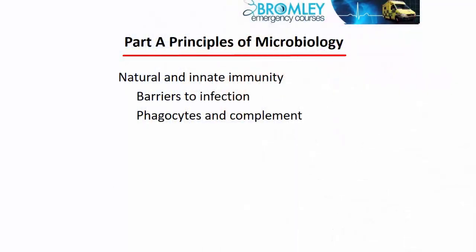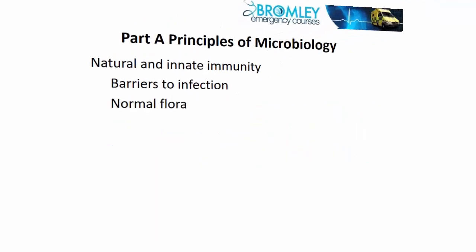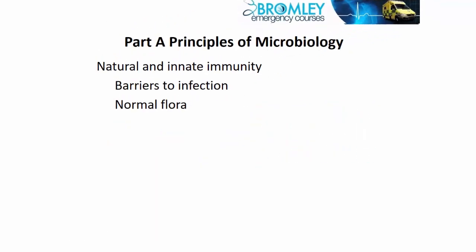This is principles of microbiology. The first section relates to natural and innate immunity — in other words, the inbuilt things that prevent us from getting infectious disease. It talks about barriers to infection and then phagocytosis and complement. There are a number of things intrinsic to the human body that prevent infection gaining access: barriers to infection.